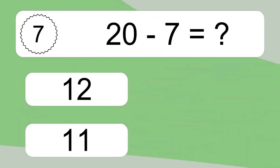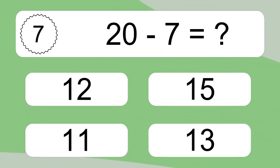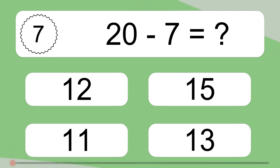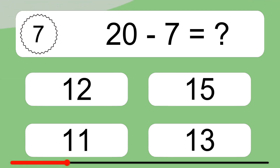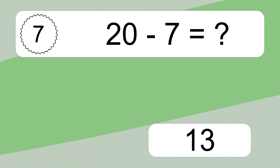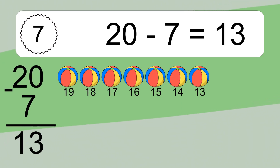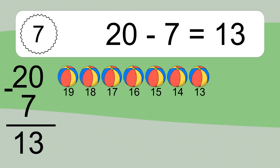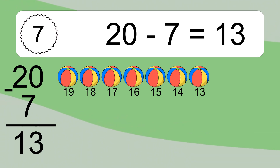20 minus 7 equals what? 20 minus 7 equals 13. Let's count it: 19, 18, 17, 16, 15, 14, 13.